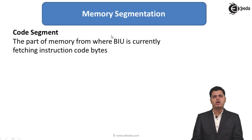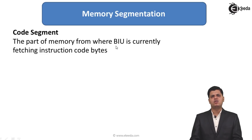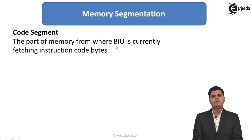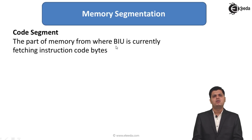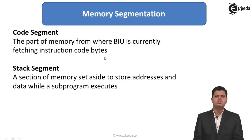The first is the code segment. It is that part of memory from where the bus interface unit is currently fetching instruction code bytes. A program consists of different instructions represented in bytes, and all these bytes of instructions are stored in the code segment. Whatever instructions the bus interface unit fetches are stored here.